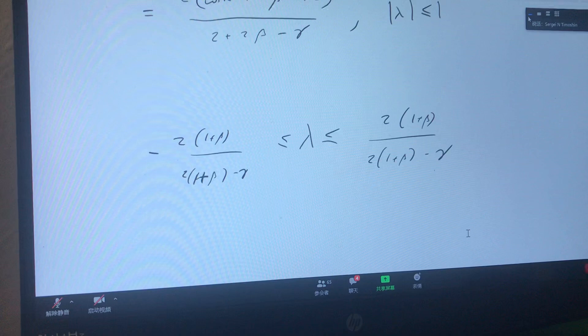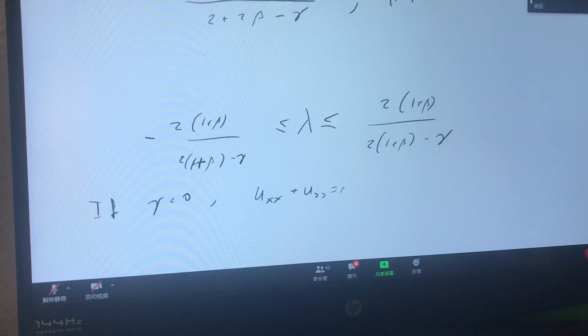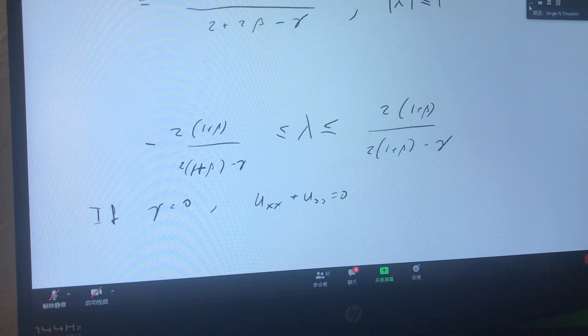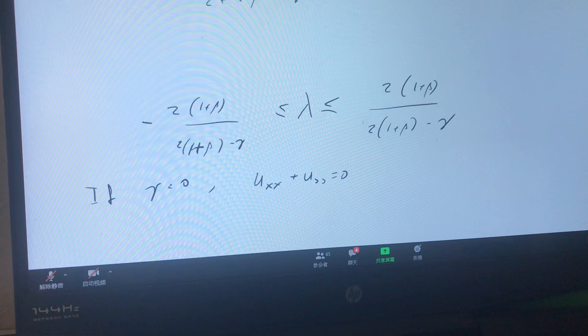What we see is, if I have gamma equal to 0, I'm solving the ordinary Laplace equation. Then both sides are equal to 1 in magnitude, so lambda is definitely between minus 1 and 1, and we have convergence. So this method, which was invented for Laplace's equation, does converge. Now what is the effect of gamma?